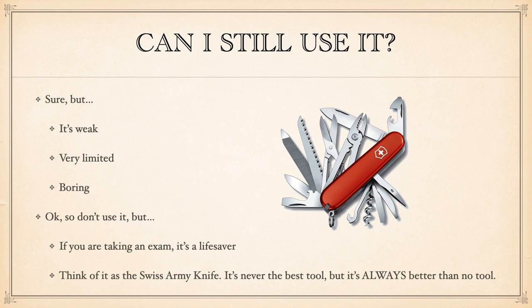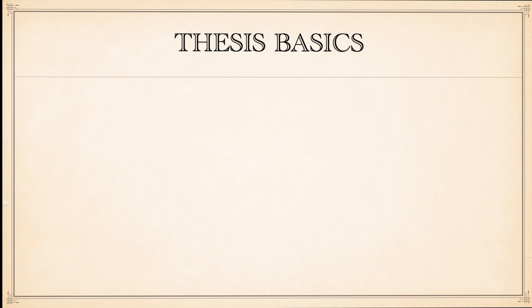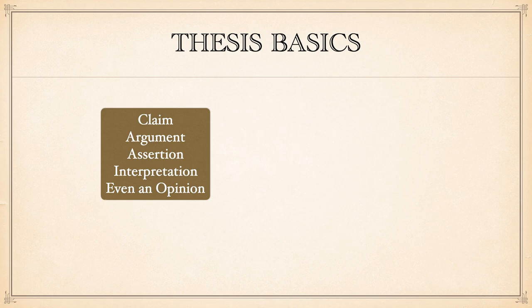Now let's start talking about what goes into a thesis once you move away from the formula. You need two things. Number one: a claim, argument, assertion, interpretation, or opinion — something someone else can disagree with. If I tell you Magic Mountain is located in Valencia, no one can disagree. But if I say Magic Mountain is the best theme park in America, I'm going to start a fight with Disney fans, Knott's Berry Farm fans, and others.